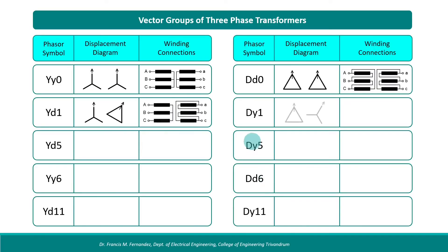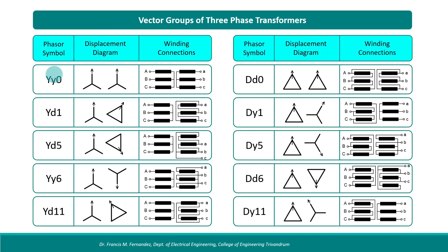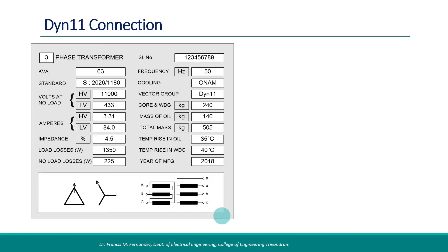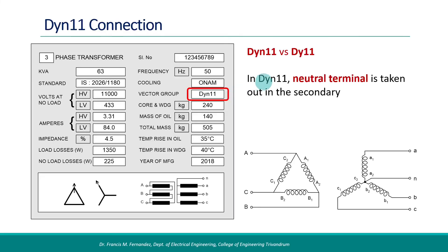Here we have a summary of all the vector groups discussed so far. The phasor symbol, the displacement diagram, and the connections in each case are shown. Going back to the transformer nameplate seen earlier, the vector group is given as DYN11. The difference from DY11 is that it has the neutral point of the secondary brought out as a terminal, and the connection diagram is changed accordingly — the neutral point is added. All the other things including the phase relationship remain the same.